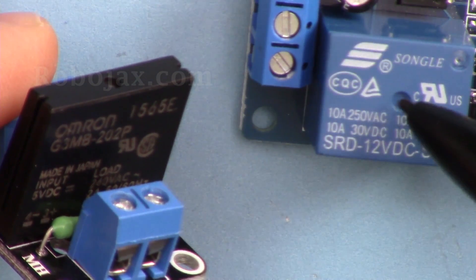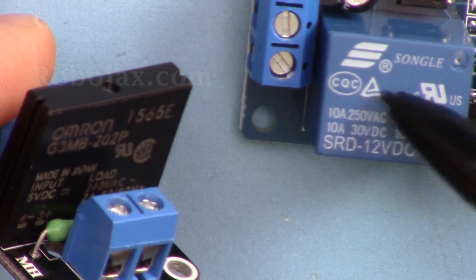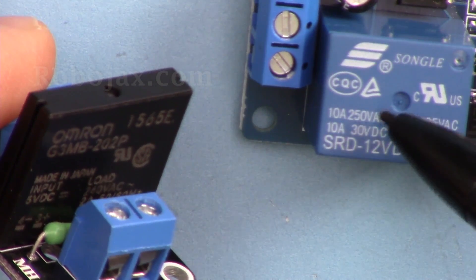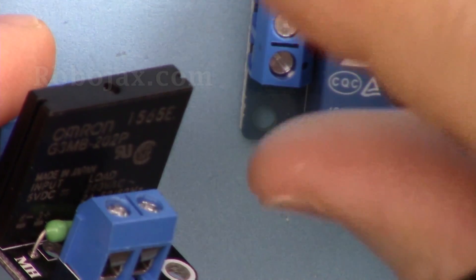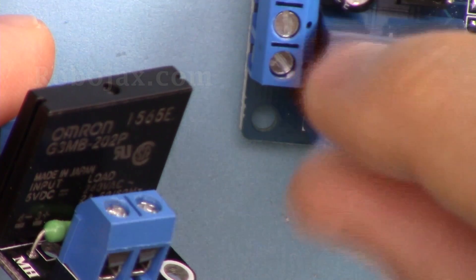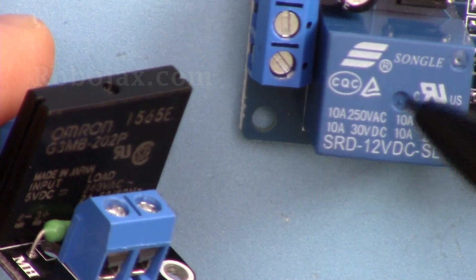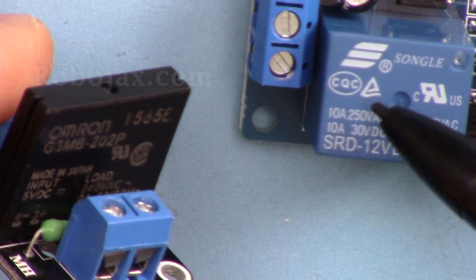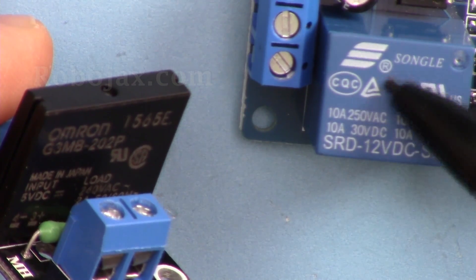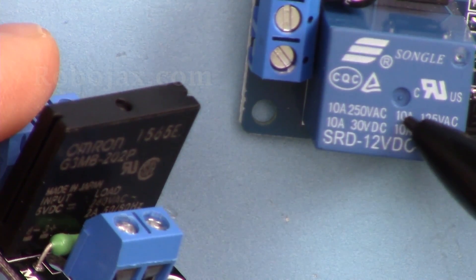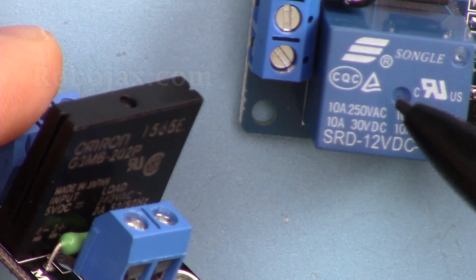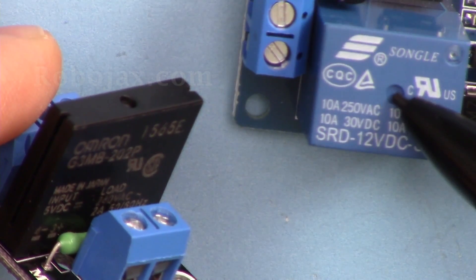The disadvantage is that this cannot handle high amounts of current or load. The disadvantage of this one is because it's mechanical, the life expectancy is much lower. When the contacts join and disconnect, it creates spark and slowly degrades the quality, and finally this will give up.